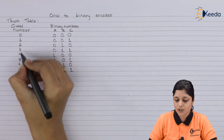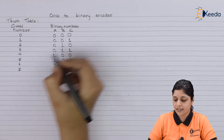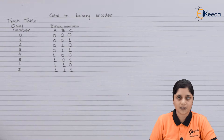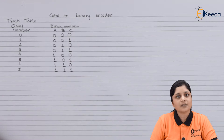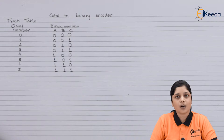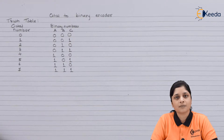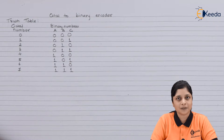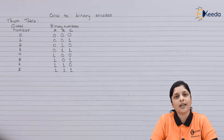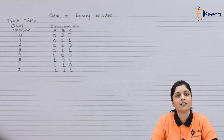In this way, you show the input octal numbers 0 to 7 and their corresponding binary numbers. Now, an encoder is a combinational circuit — a circuit in which the output depends only on the present input. Here, octal numbers are converted into binary numbers, with octal 0 to 7 at the input side and 3-bit binary numbers at the output side.